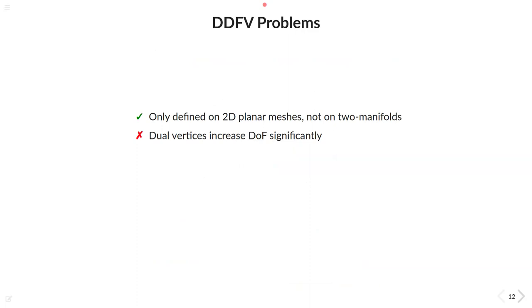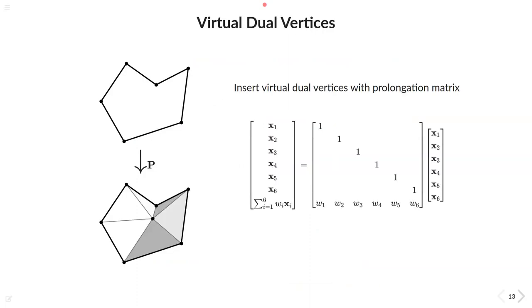Because here we make use of the same idea we introduced in the polygon Laplacian made simple paper from last year. Given a general arbitrary polygon, we can construct now the dual vertices by inserting additional point per face. This can be achieved by multiplying the original vertex positions with a so-called prolongation matrix, here depicted as p.